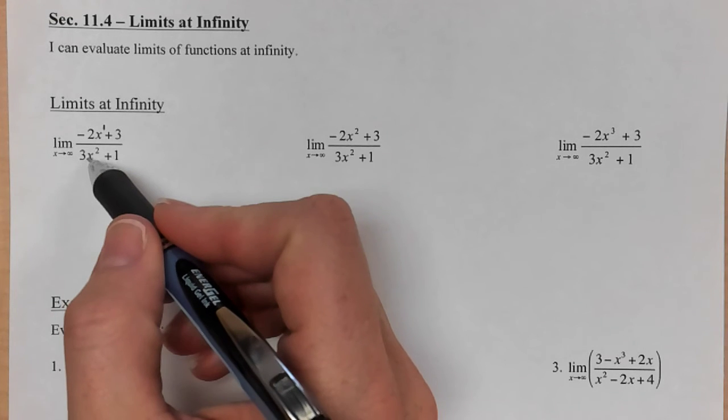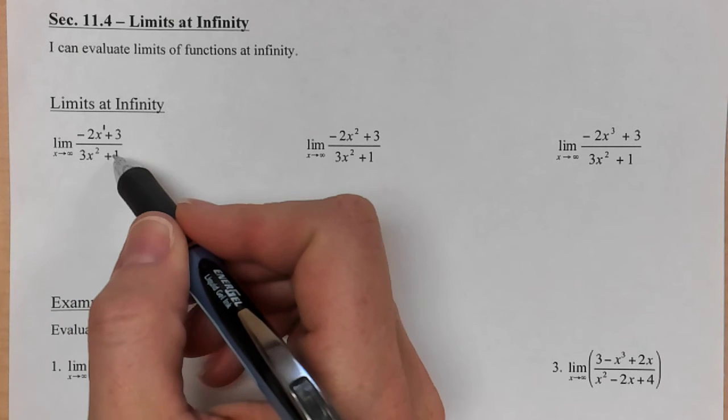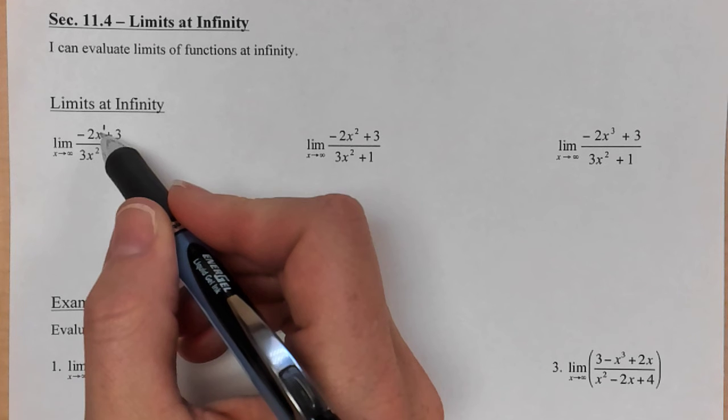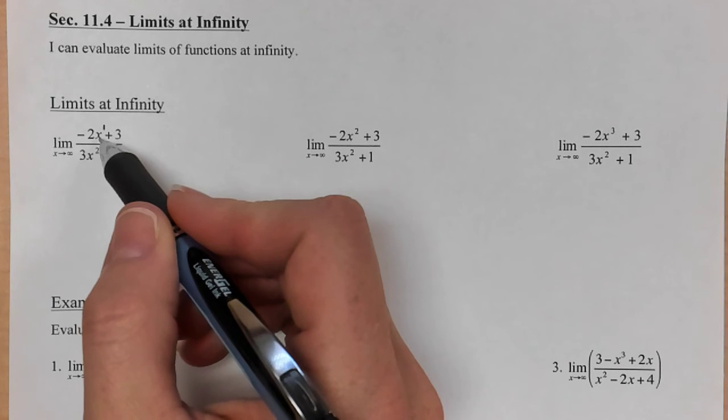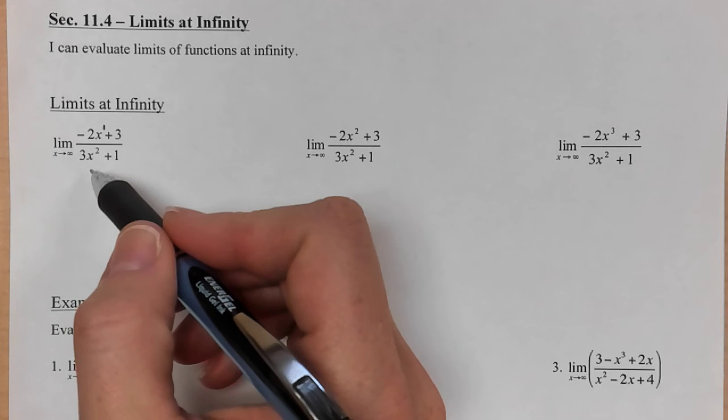And then if I put that same number down here, 100, but I square it this time, times it by 3 and add 1, this is an even bigger number on the bottom. So no matter what I put in the top, well, actually whatever I put in for x, the top does not grow as fast as the bottom. The bottom is growing way faster than the top.